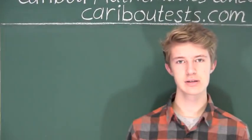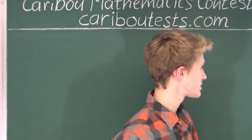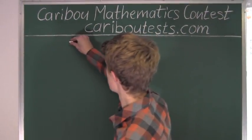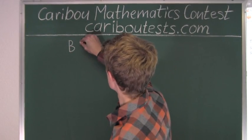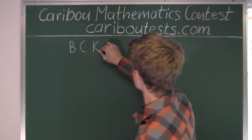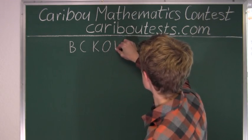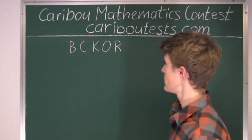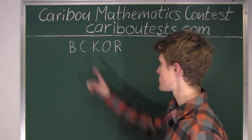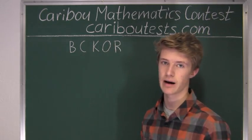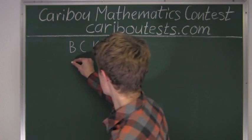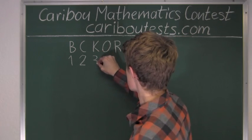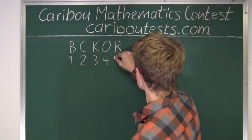Alright, so we want the letters in alphabetical order. And the question already gives us the first word in alphabetical order, which is B-C-K-O-R. And to make it easier to see what letter goes in front of which letter, we will translate this to numbers. So we will number these letters 1 to 5, just starting with B being 1.